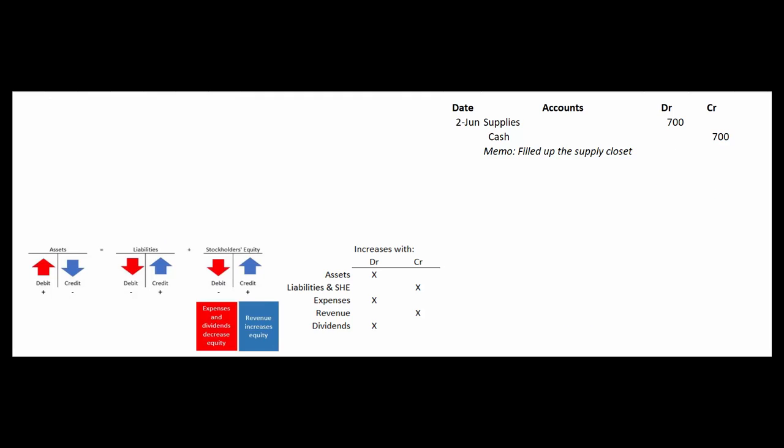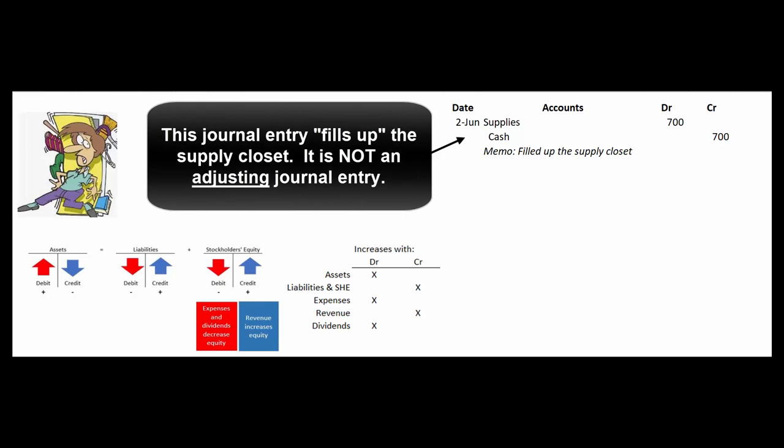It's a similar thing as to supplies. So we'll fill up the supply closet by paying say $700. So we'll debit the asset supplies for $700 and credit cash. Supplies is an asset. Assets increase with debits. Cash is an asset. Assets decrease with credits.